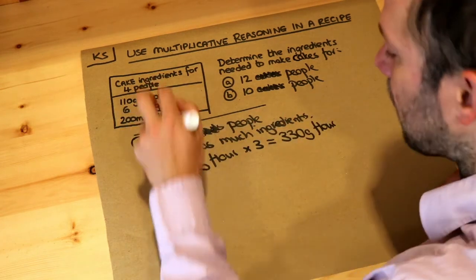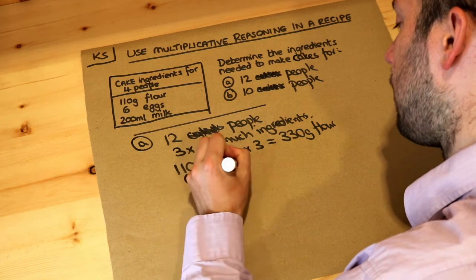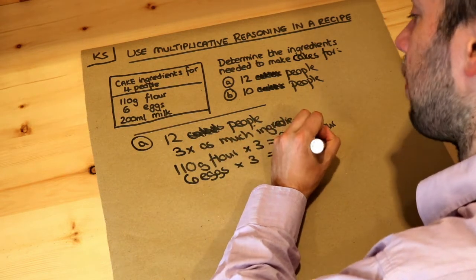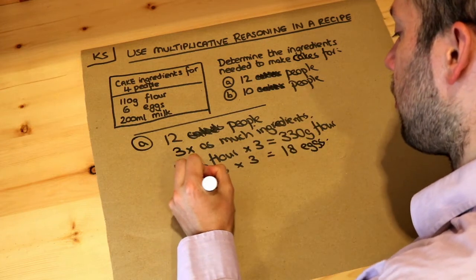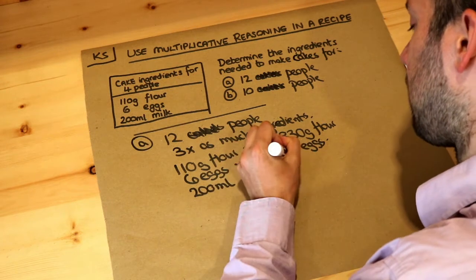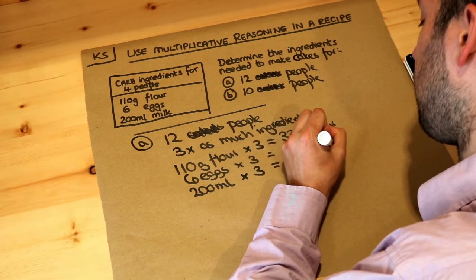We need three times as many eggs. So if we have six eggs and times that by three, we have 18 eggs. Finally, if we have 200 milliliters of milk for four people, then for 12 people, three times as much, that's 600 milliliters of milk.